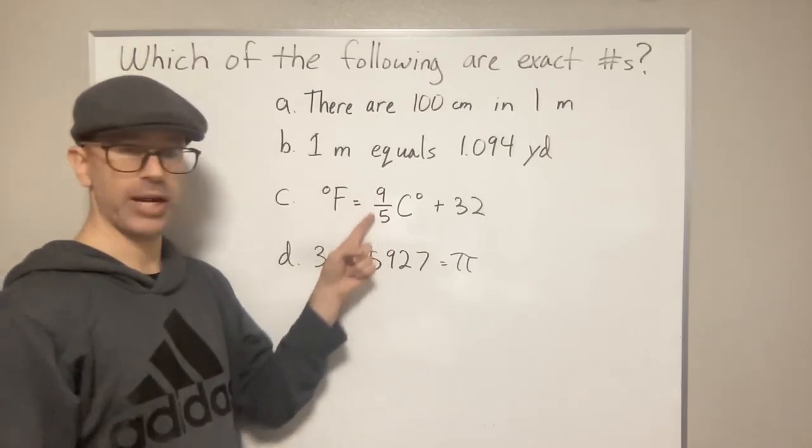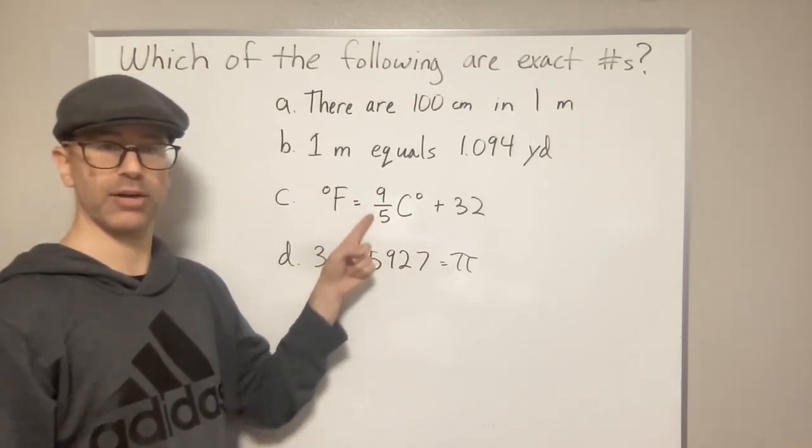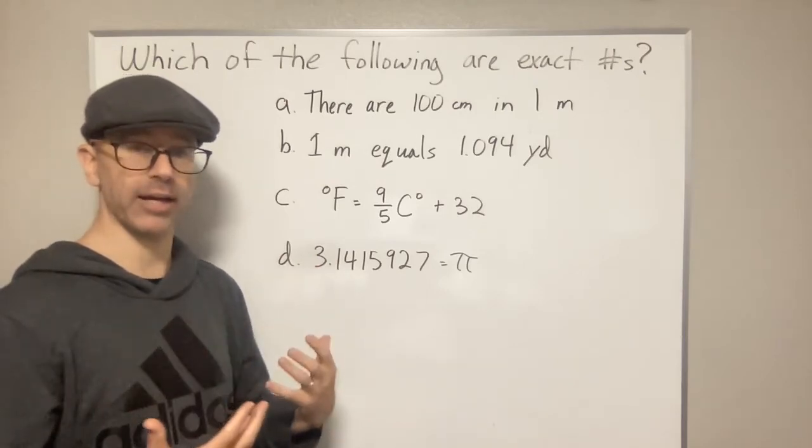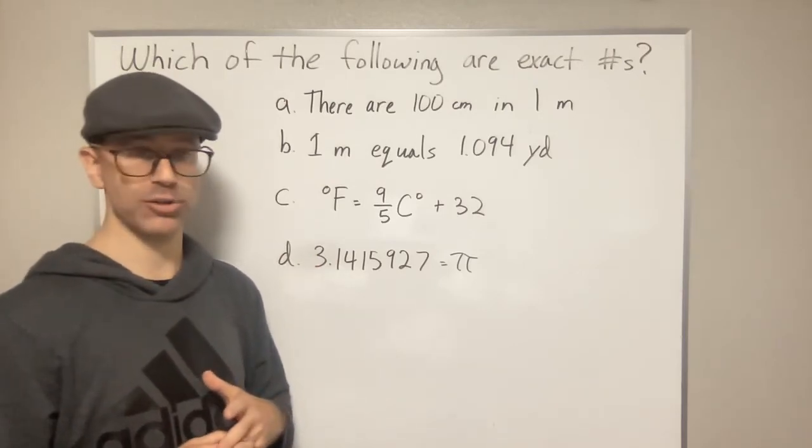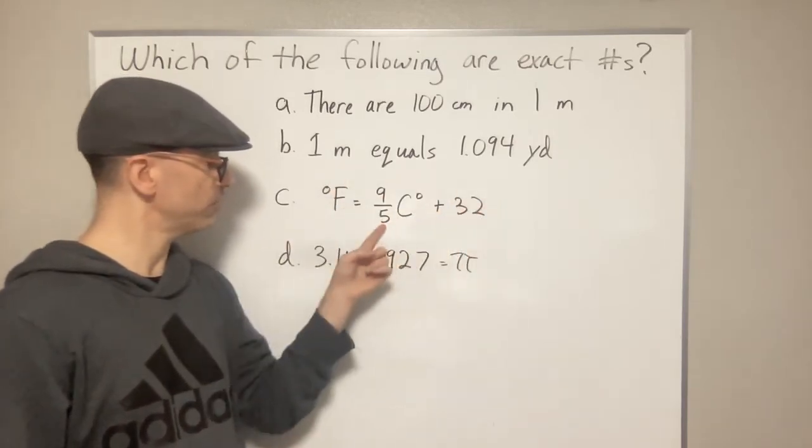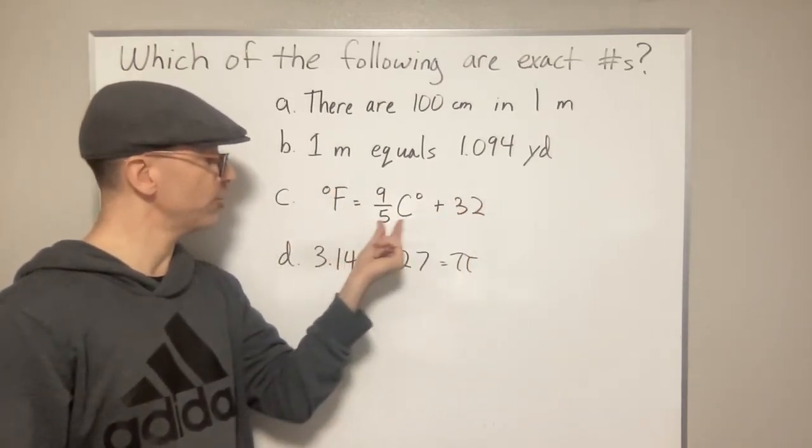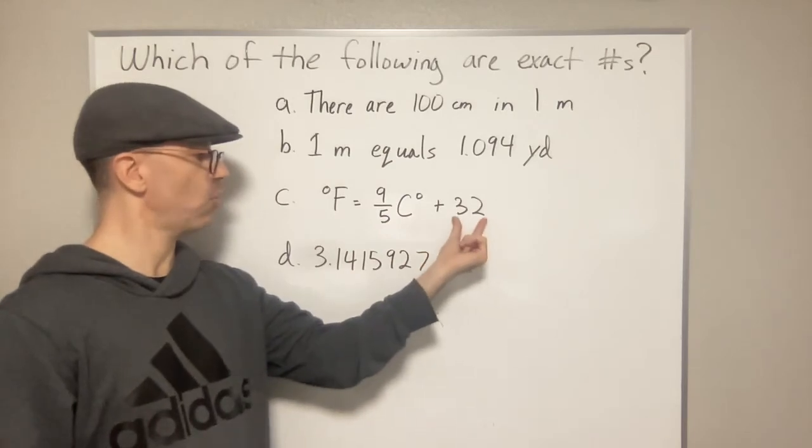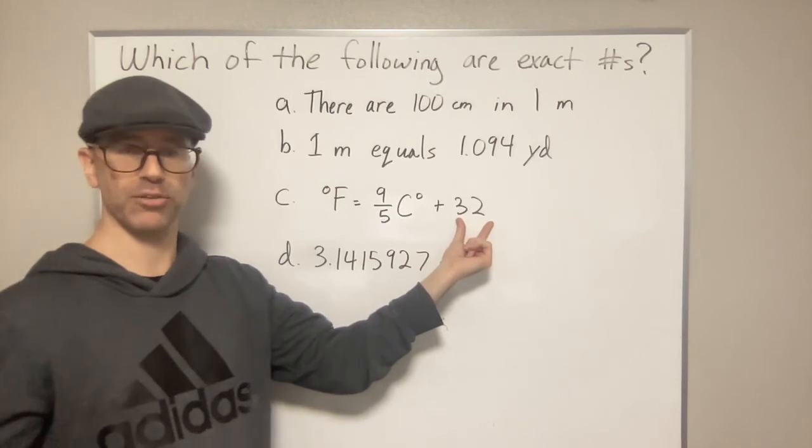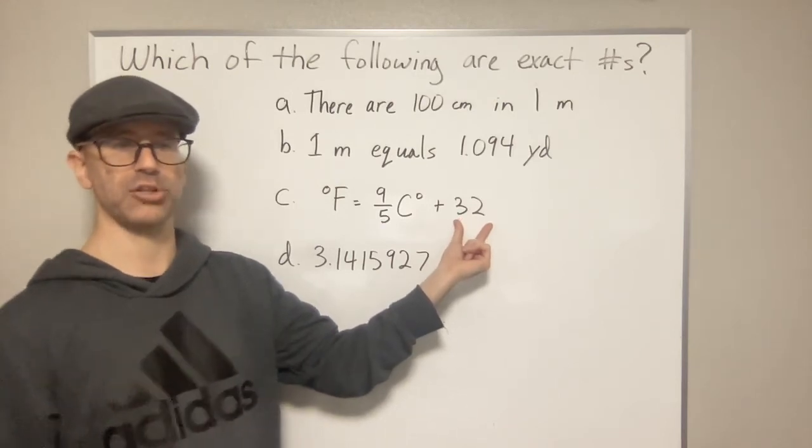So that's a ratio between the two scales. That's exact because the scales have been defined that way. They haven't been measured that way, it's been defined. So that's where these numbers come from. So whenever you're using this equation, you can ignore these as far as sig figs go because they have an infinite number of sig figs because of their exact nature.